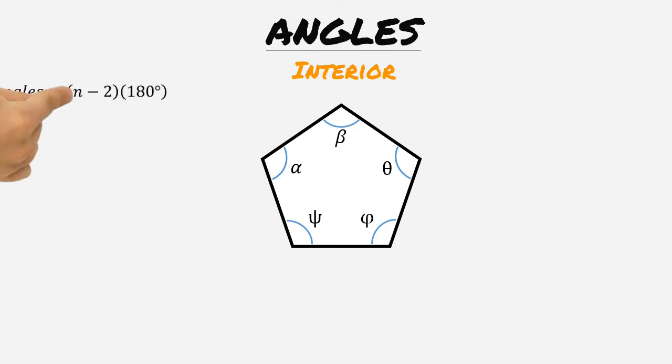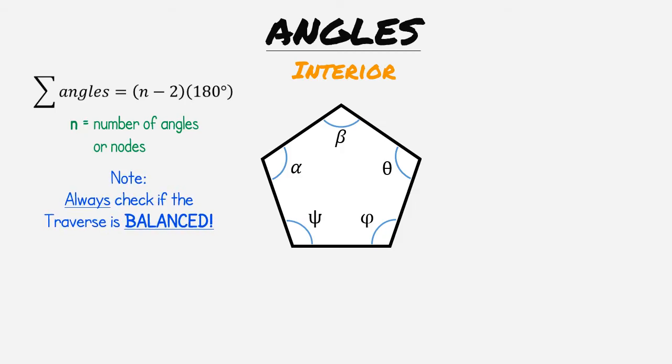Our first equation is used to determine the total degrees in any closed polygon. In this equation the letter N is the total number of angles or nodes on the polygon. It is always best to check if the given polygon is balanced. Do not assume that it is.